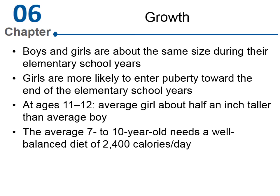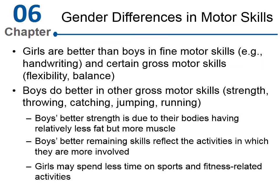For the growth section, kids need a lot of calories because they're growing — about 2,400 calories a day. As for motor skills, there are two types: fine and gross. Fine motor skills involve the fingers and small precise movements. Gross motor skills involve the big muscles like legs. Girls tend to be better at fine motor skills.